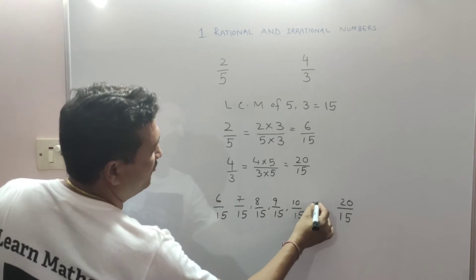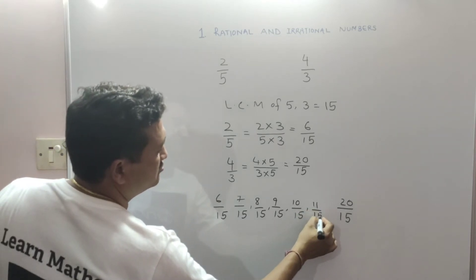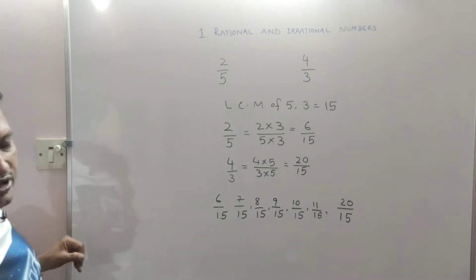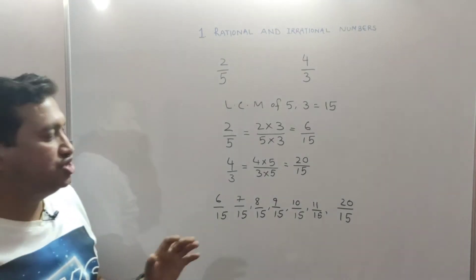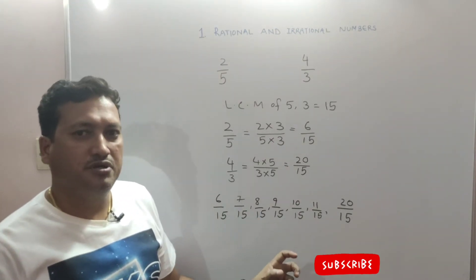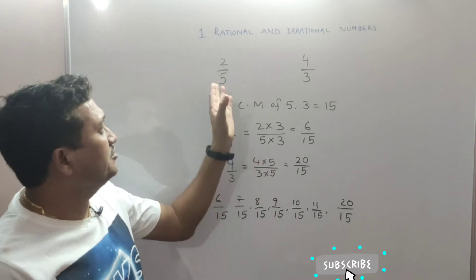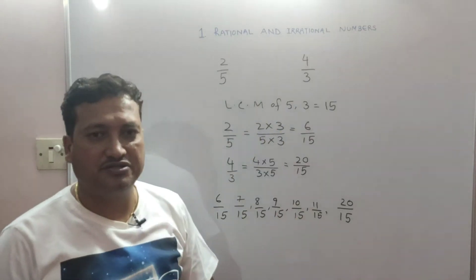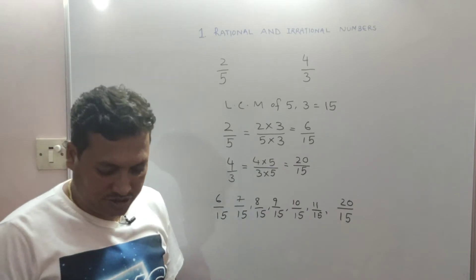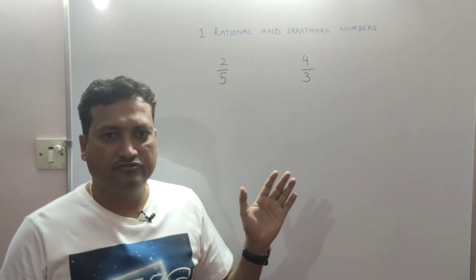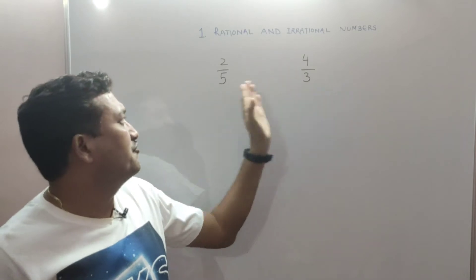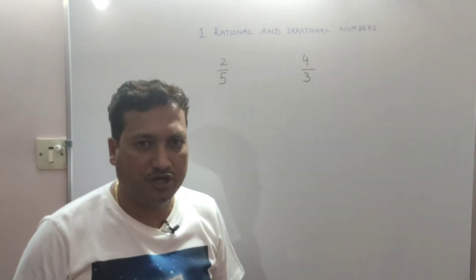Continuing: 11 upon 15, 12 upon 15, 13 upon 15, and so on. This way we can find rational numbers lying between the two given rational numbers. This is the first method. Now let's see the second method for finding a rational number between 2 upon 5 and 4 upon 3.